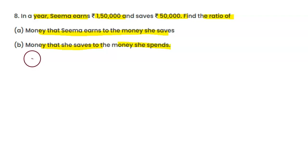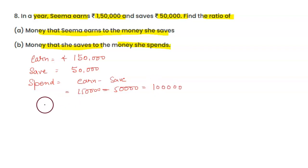Earning is 1,50,000 and saving is 50,000. Spend will be earning minus saving, so 1,50,000 minus 50,000 equals 1,00,000. Now we'll find the ratio.